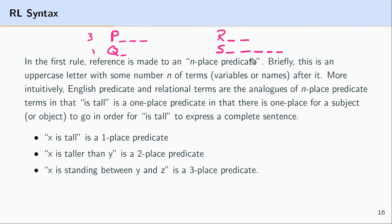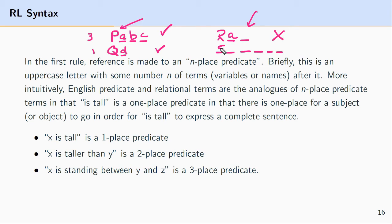The rule says we form a well-formed formula once we've identified what type of predicate it is — one, two, three-place, etc. — provided it has that many names after it. So if p is a three-place predicate with three names, we have a well-formed formula. If q is a one-place predicate and we have one name, then Qd is a well-formed formula. But if r is a two-place predicate and we only have one name, that is not a well-formed formula. And if s is a five-place predicate with only two terms, it is not a well-formed formula either.